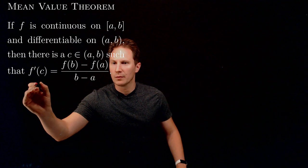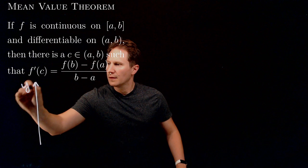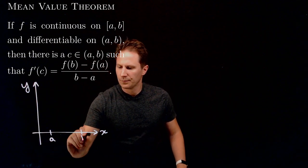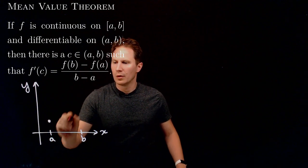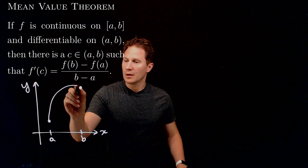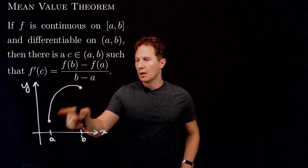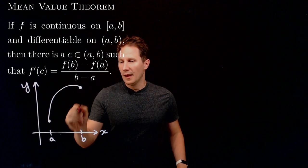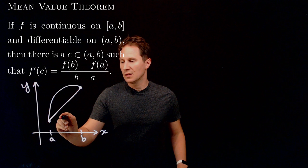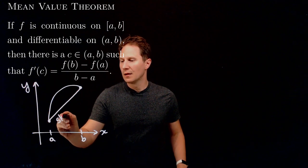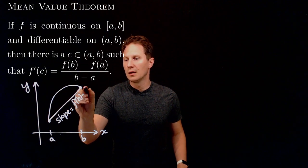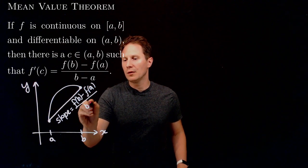The mean value theorem tells us that if we have a function that is continuous on some closed interval [a,b] and differentiable for every x between a and b — the endpoint values need not be the same, but the derivative must exist between a and b at all points — then if we connect the endpoints on the graph over this closed interval we get a secant line whose slope is found to be f(b) minus f(a) over b minus a.